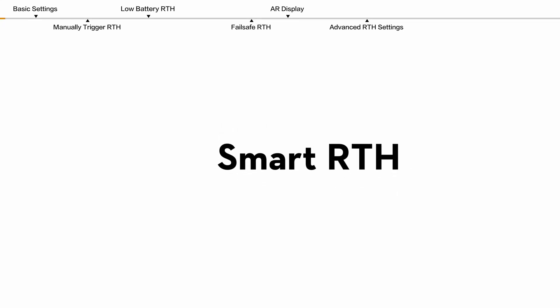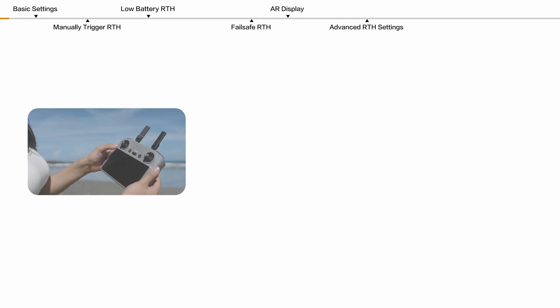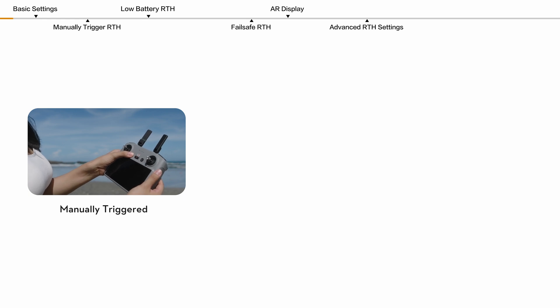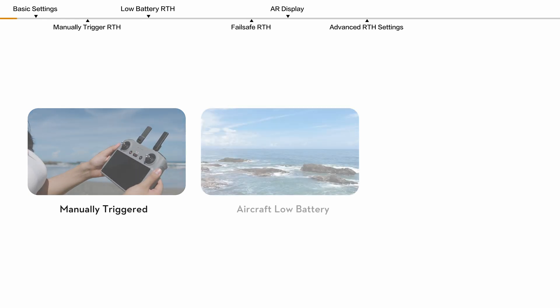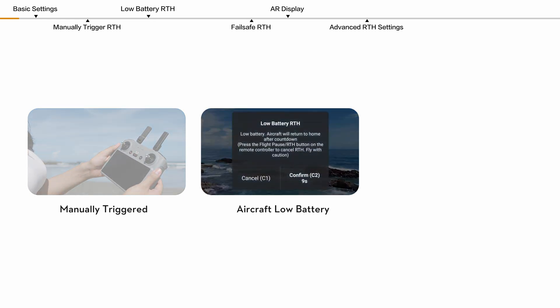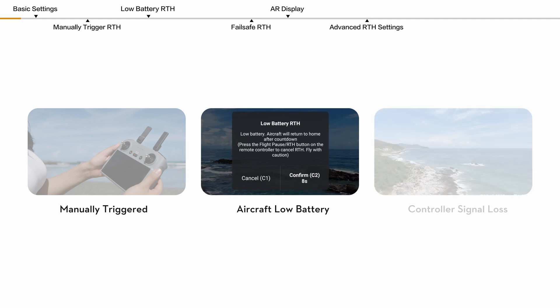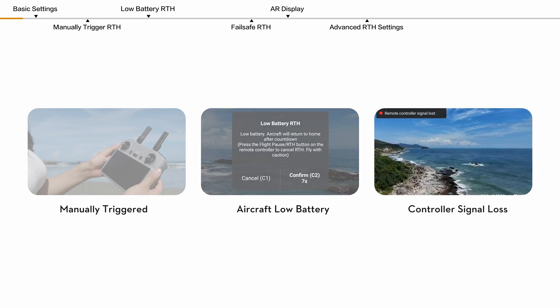Smart RTH. RTH can be triggered in three ways: manually triggered, automatically triggered by the aircraft low battery, or automatically triggered by the control signal loss.